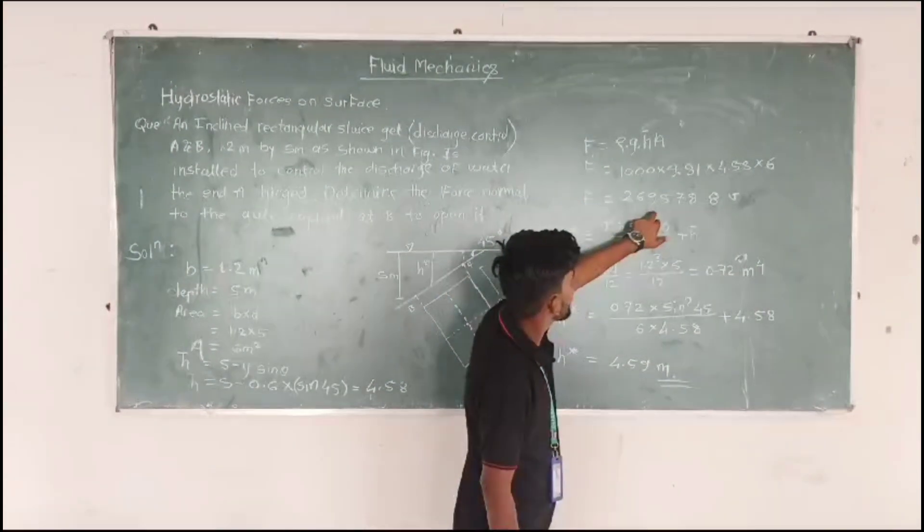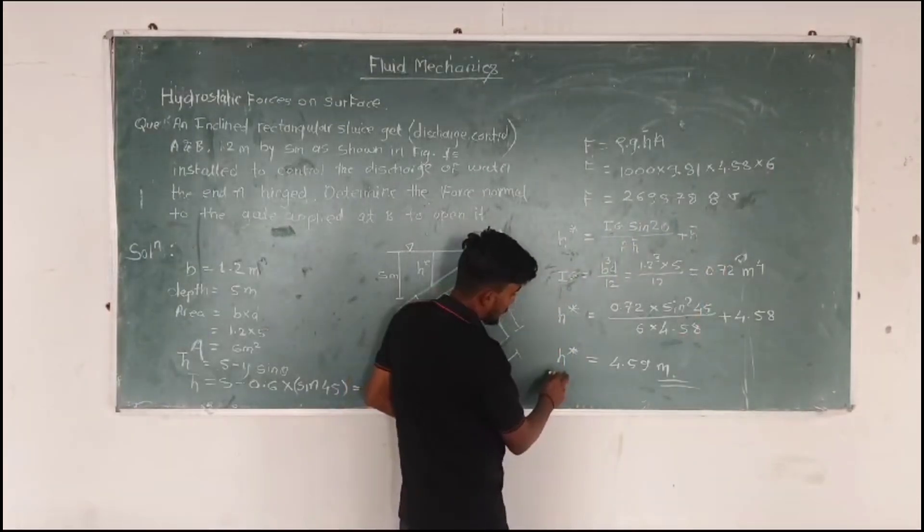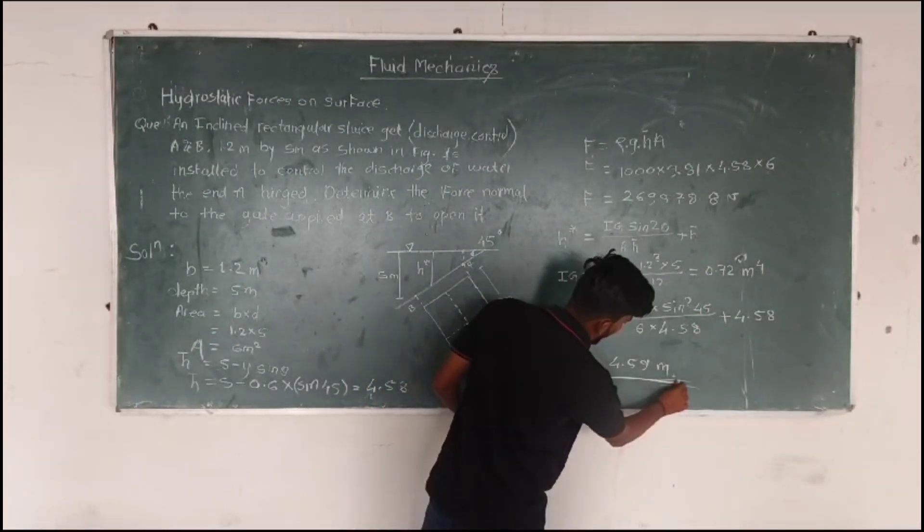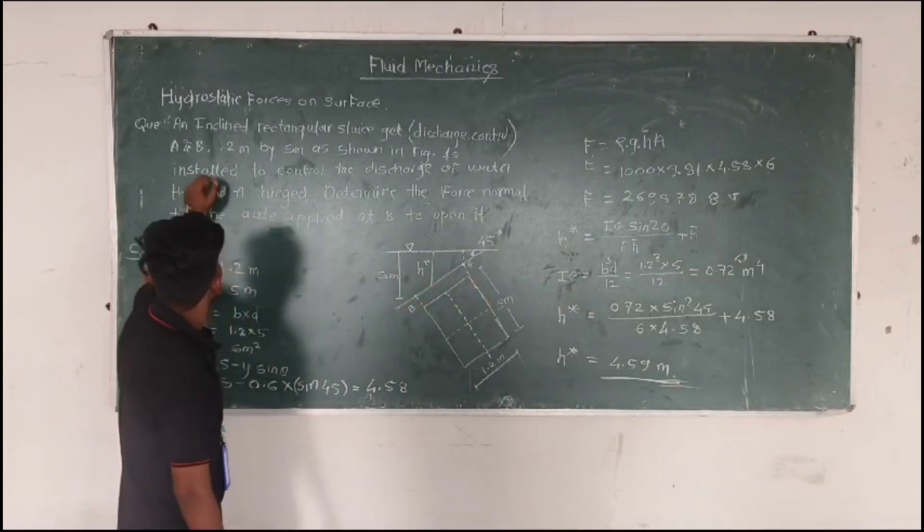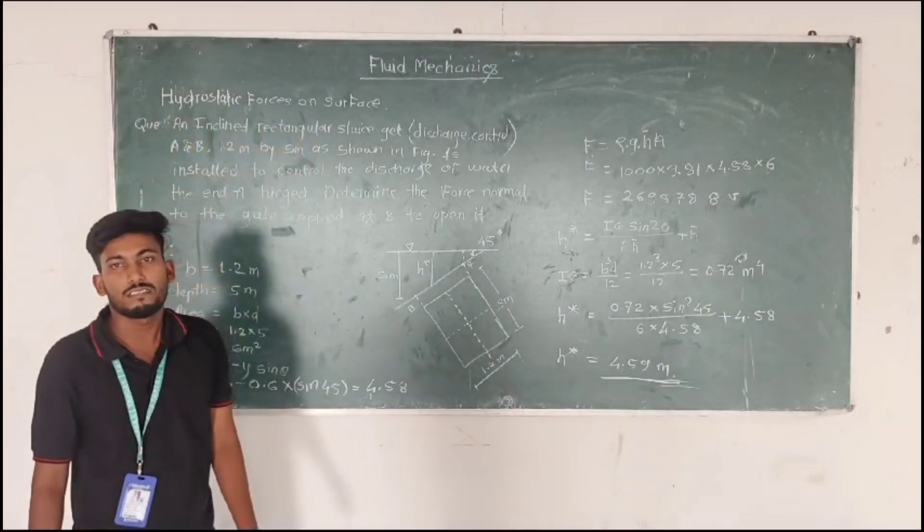The total pressure is equal to 26 times 278.8 mm, and the total center of things is 4.5 mm. So that's all about hybrid pressure. Thank you.